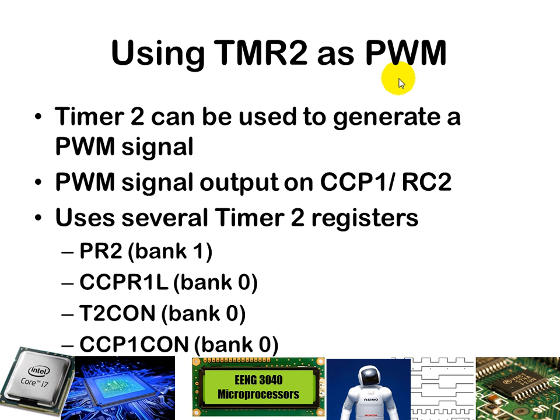There are several different registers we're going to have to use to configure pulse width modulation on timer 2. Previously we've talked about timer 0 and briefly about timer 1. We haven't gotten much into timer 2, largely because it's a little more complicated — there are more bits to deal with. There are four registers: PR2, CCPR1L, T2CON, and CCP1CON, that we will use to configure our pulse width modulated signal.